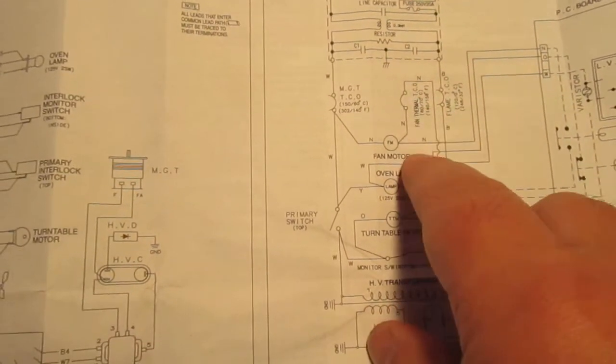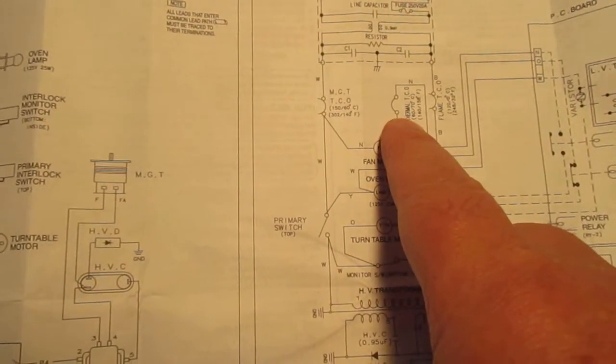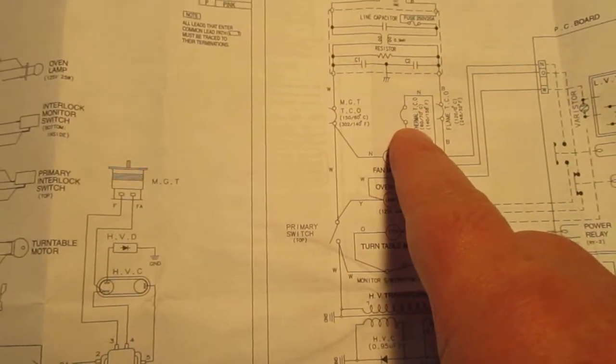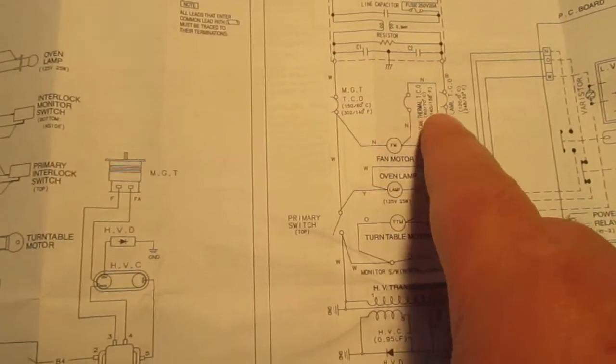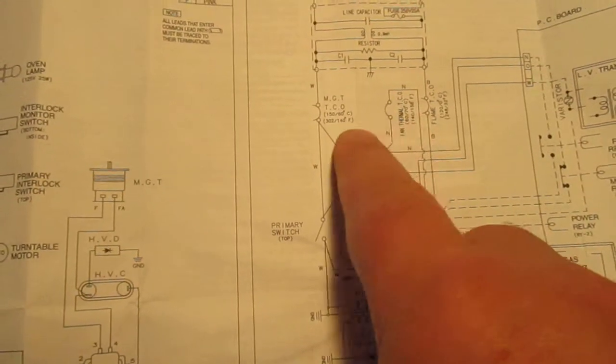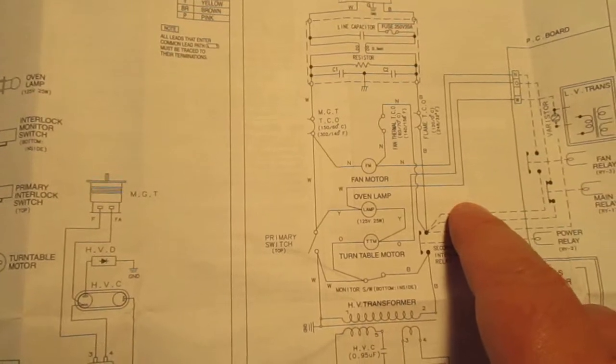Go on the internet and look for the schematic symbol for wiring schematic diagrams and you will find what these mean. You've got to have a schematic, a technical data sheet, if you're going to try to fix your microwave.